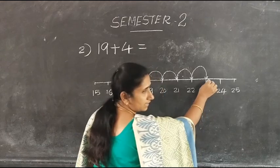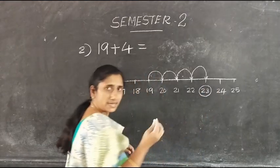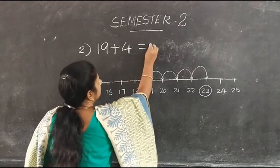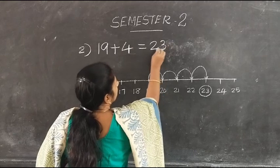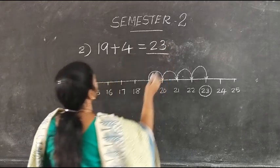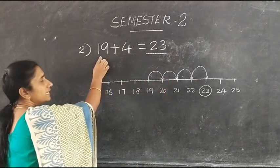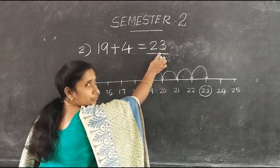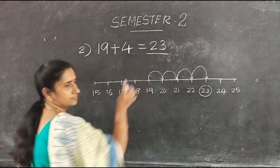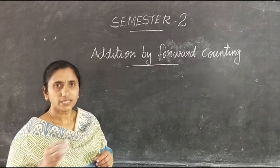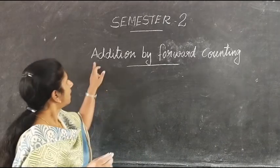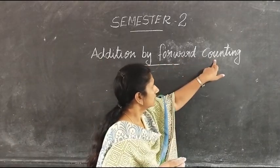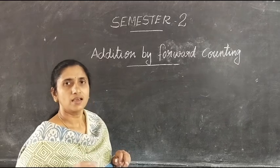Now we reached 23. So our answer is 23. So 19 plus 4 is equal to 23. Our next topic is addition by forward counting.